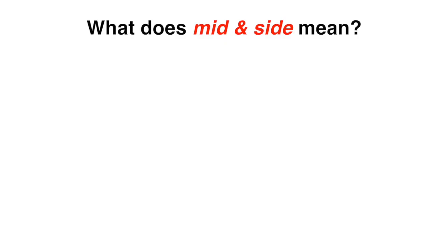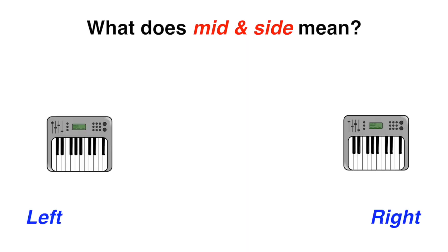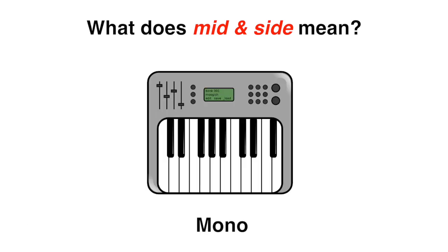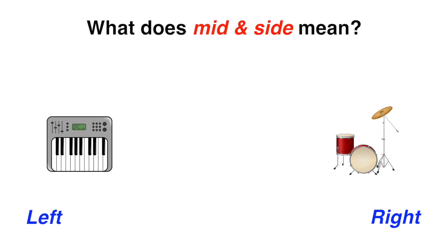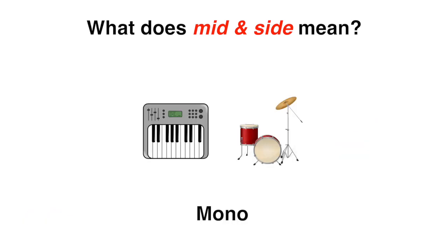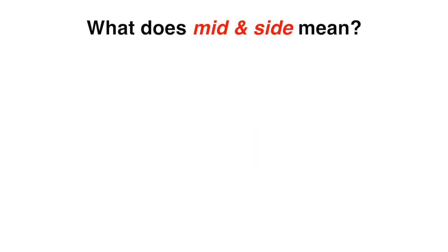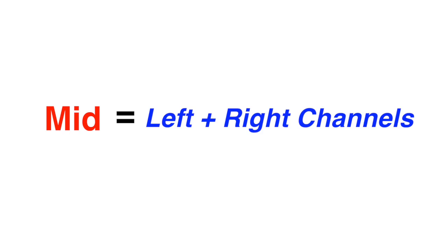When adding these channels together, the audio that is present in both channels will be doubled in volume when converted to mono. The sounds that are hard panned will be the same volume when converted to mono. So if sounds are more stereo, they will be quieter when converted to mono. Knowing this, we can say that mid equals left plus right channels.